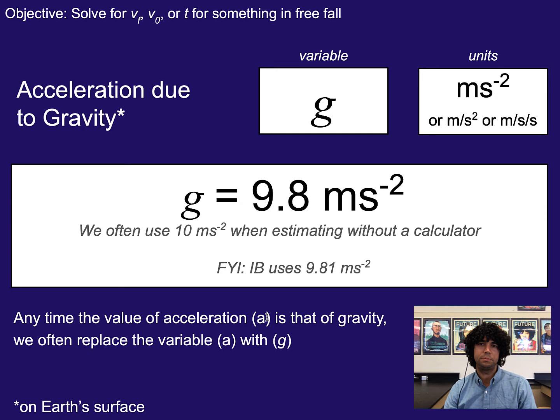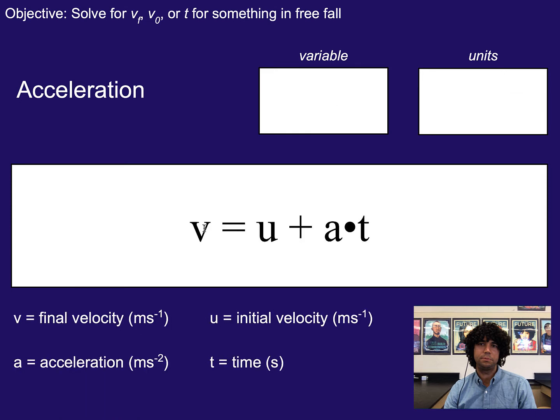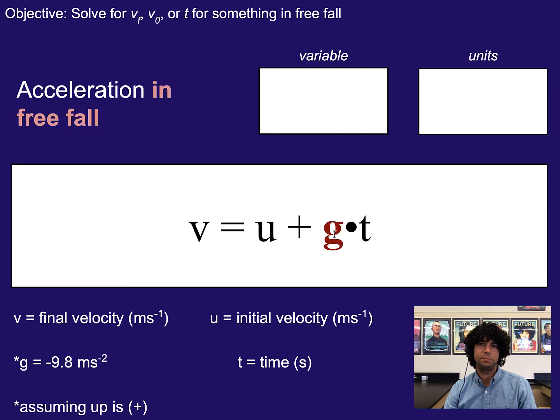So that means in equations like this one, where v equals u plus at, in other words, final velocity equals initial velocity plus acceleration times time. If we know something is only accelerating because it's falling, we can just plug in g instead of the acceleration, and that becomes basically what's happening for something in free fall. Whether or not you report out g as the given info, or you say the acceleration a equals 9.8 meters per second squared, both are fine as long as you're showing your given info in some way.